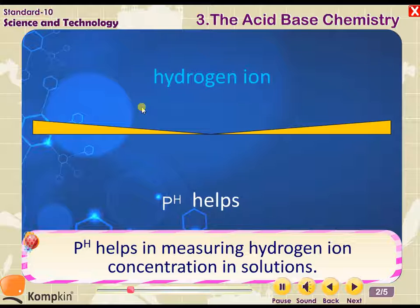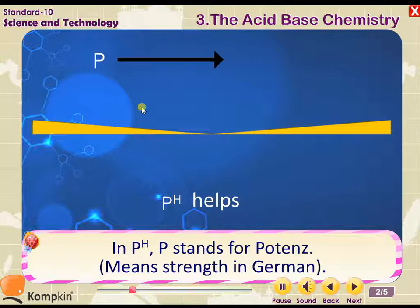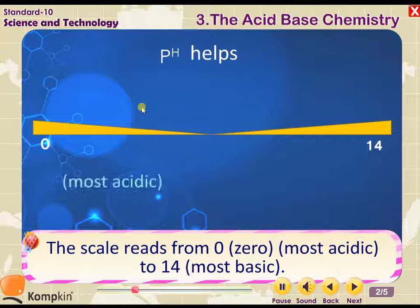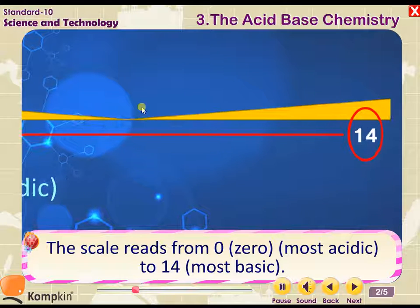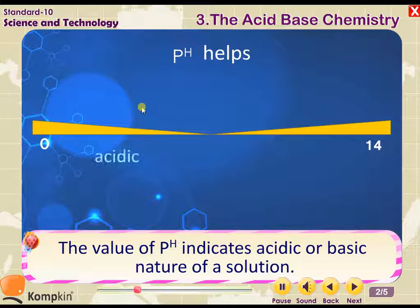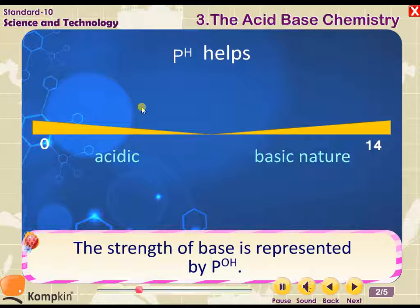pH helps in measuring hydrogen ion concentration in solutions. pH stands for 'potence,' meaning strength in German. The scale reads from 0 (most acidic) to 14 (most basic). The value of pH indicates the acidic or basic nature of a solution.